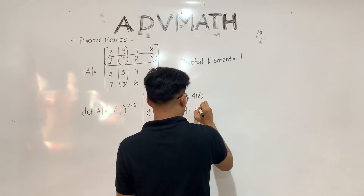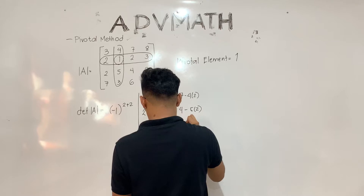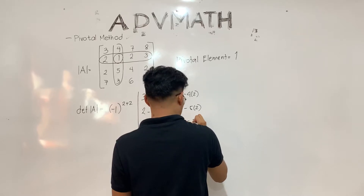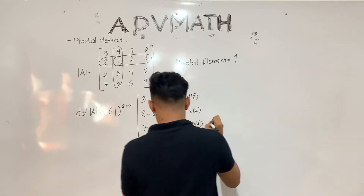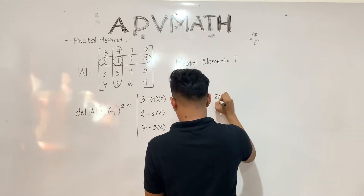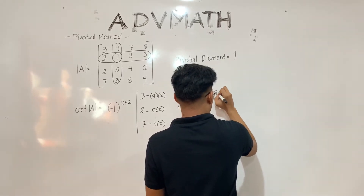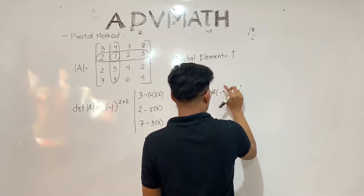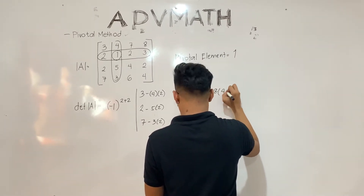Upon writing the numbers, we need to carefully check that they match the previous matrix. We should not be confused when writing the numbers again — double checking is a must.